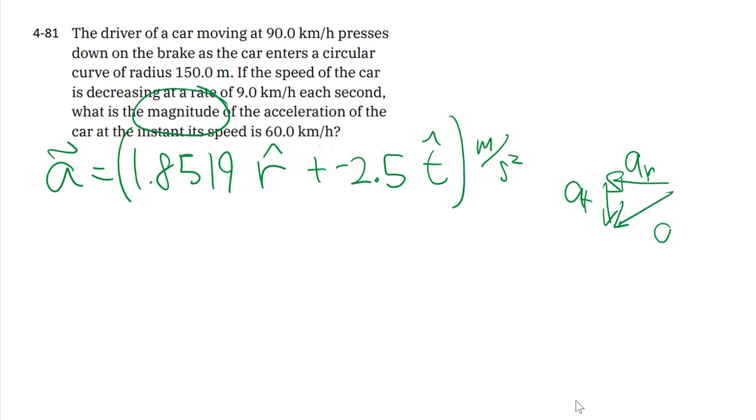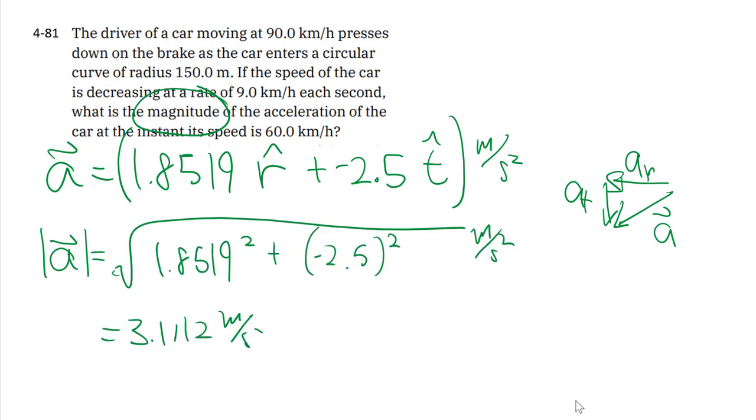So then we can still use Pythagorean theorem to get the overall magnitude, giving us 3.1 meters per second squared. So just an example of these non-uniform circular motion, and how if we use radial and tangential components, it makes the problem actually doable.